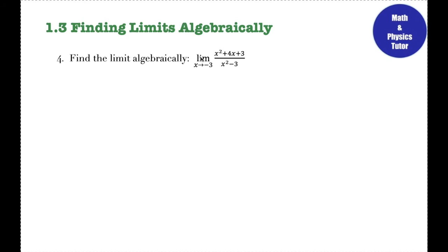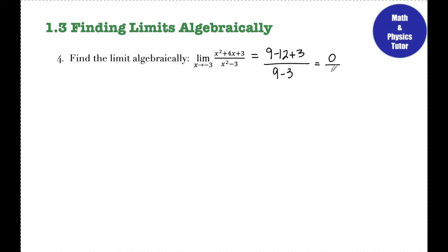Number 4: the limit as x approaches negative 3 of (x² + 4x + 3) over (x² − 3). I'm going to plug in negative 3 for x. In the numerator: (−3)² + 4(−3) + 3 = 9 − 12 + 3 = 0. In the denominator: (−3)² − 3 = 9 − 3 = 6. Since I have 0 over a number, the limit is just 0.